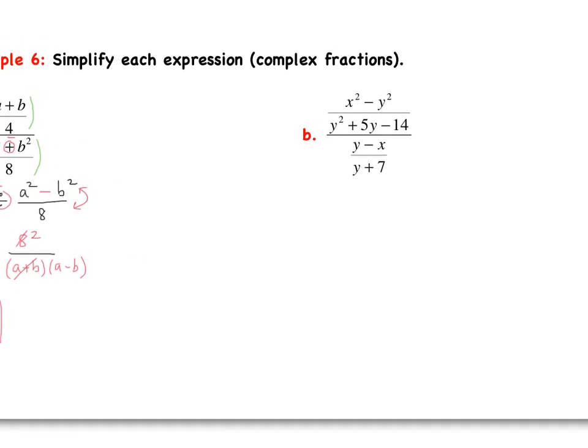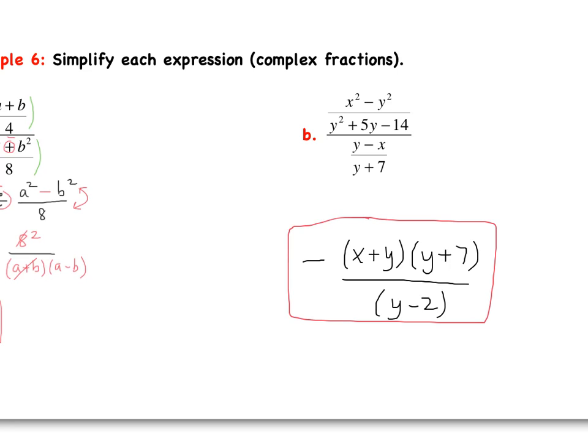Try part B on your own — there's more factoring to be done, then cancel where you can. Remember to apply the side note where a minus b over b minus a simplifies to negative 1. If you have questions or didn't get the same answer, make sure you ask your teacher tomorrow in class. That's it for our notes today — have a great night.